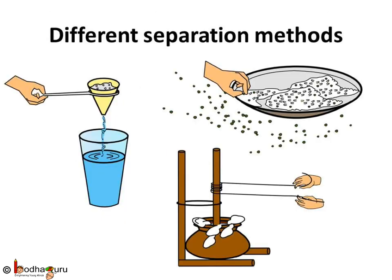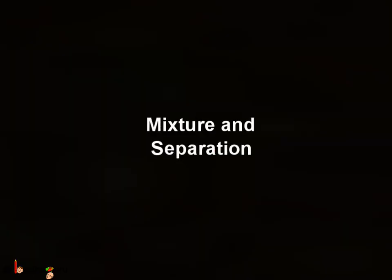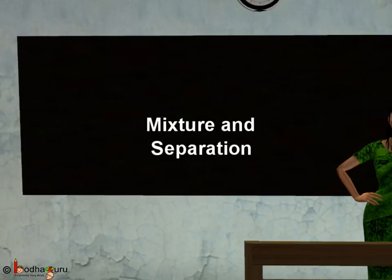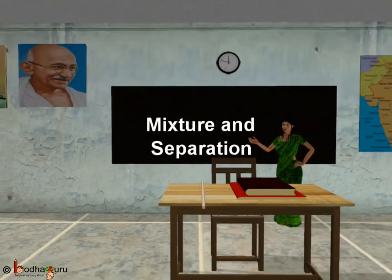So which technique needs to be used for separation depends on many things — like the type of mixture, whether it is solid, liquid, or gas; the nature of the components such as shape, colour, size, solubility, and their concentration, etc. Hence there are different methods to carry out different types of separation, and one method cannot be used for all. Now you know what separation is and why separation is required for mixtures in our day-to-day life.